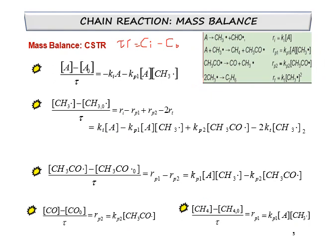Now let's look at the mass balance again for the same acetaldehyde chemical reaction producing methane and carbon monoxide, with all the initiation, propagation, and termination steps. But this time, if the chemical reaction occurs in a CSTR, how would the mass balance look? As I already told you, for CSTR the mass balance is tau times reaction rate equals remaining concentration minus initial concentration. Let's look at it for all species.